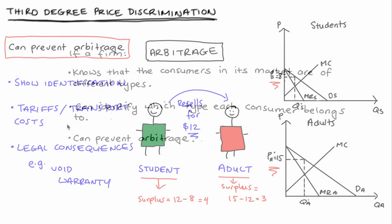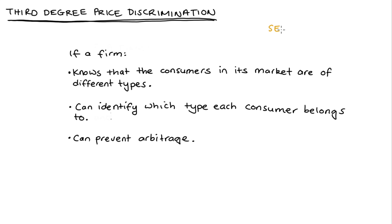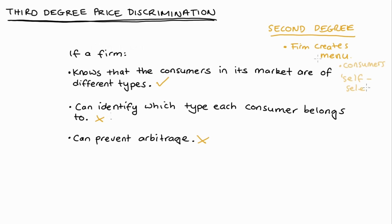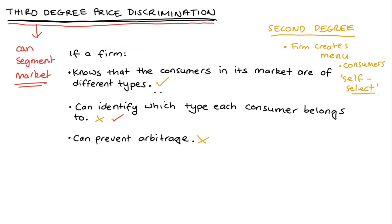Before I finish, I'll note that some courses and textbooks differentiate between second-degree and third-degree price discrimination along these lines. Second-degree price discrimination is when the firm knows consumers are of different types but can't identify which group a particular individual belongs to and can't prevent arbitrage — so the firm creates a menu of options hoping consumers self-select, revealing their type. In third-degree price discrimination, the firm has everything it needs to successfully segment their market. That said, some courses only discuss second-degree price discrimination as block pricing, so that distinction may or may not be useful for you. I hope this video helped — please like and subscribe, and have a good one.